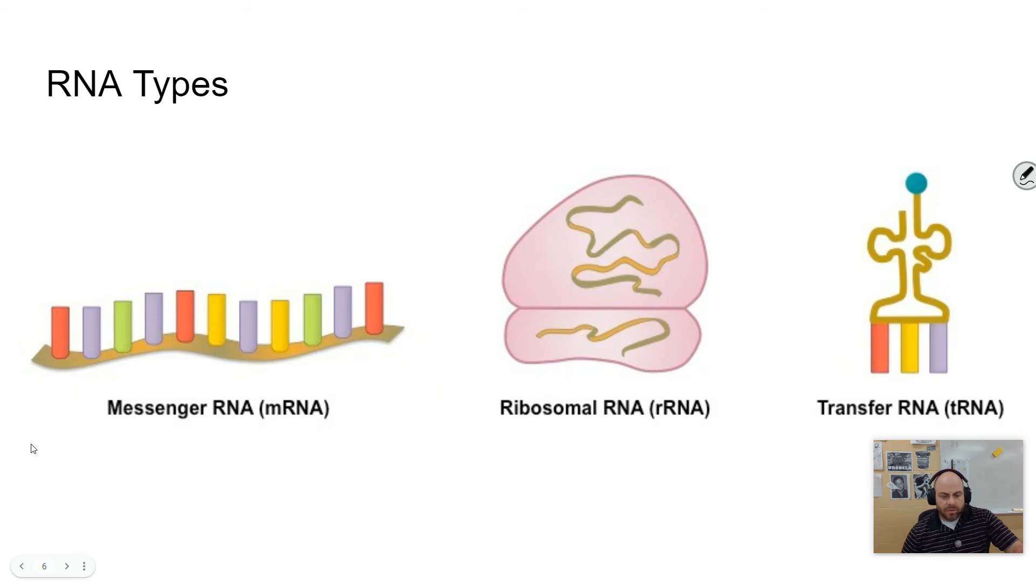All right, so there are three kinds of RNA that we're going to talk about in this class. Actually, we're going to talk about another kind, but these are the three main kinds. There's messenger RNA, and messenger RNA is the product of transcription. We're going to talk about some additional modifications that are made to the RNA to convert it into a full-blown mRNA.